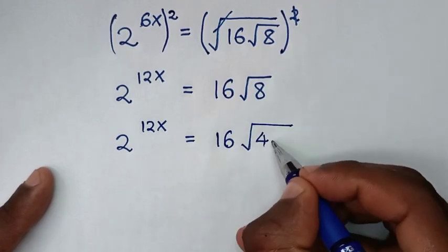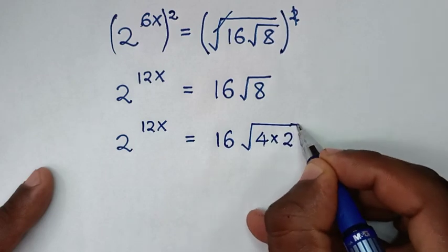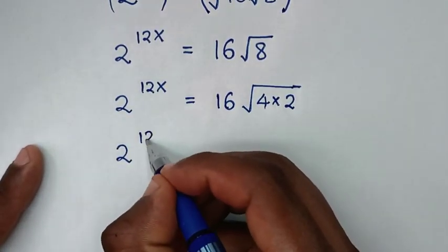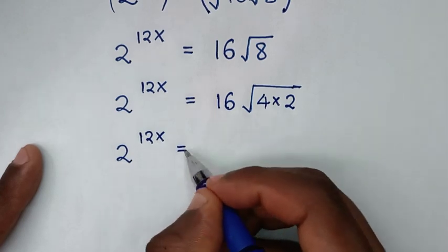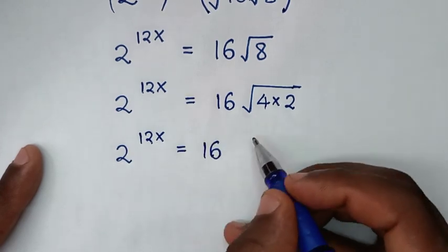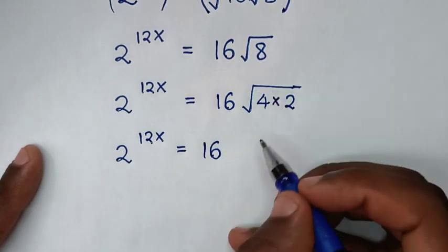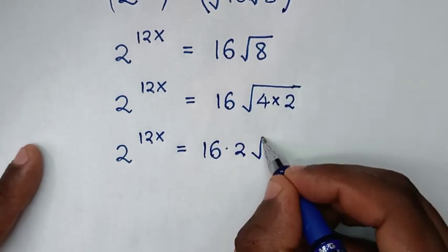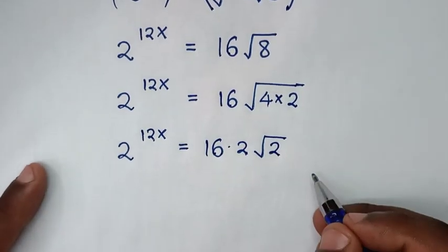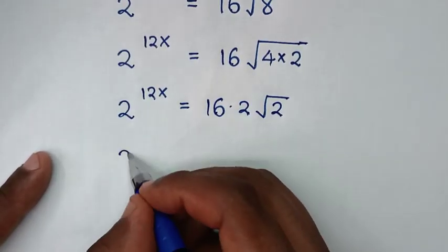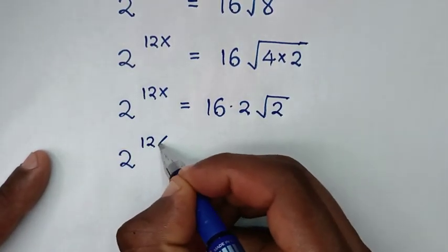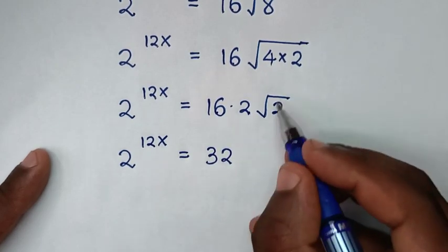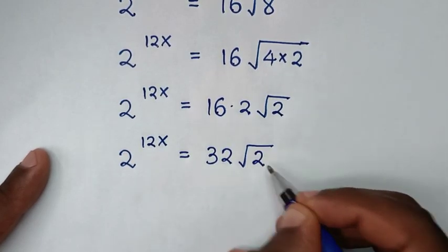The square root of 8 is the same as the square root of 4 times 2, which simplifies to 2 times the square root of 2. So we have 2 power of 12x equal to 16 times 2 times the square root of 2, which is 32 times the square root of 2.